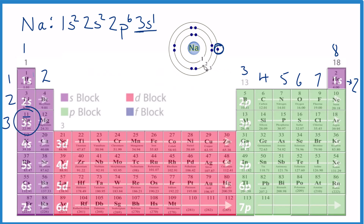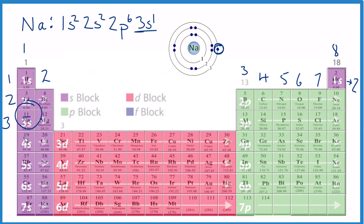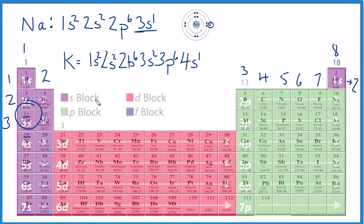Pause and write the electron configuration for potassium (K), which has 19 electrons. For potassium, we know it's in the fourth energy level and it ends in s1, so it's going to end in 4s1. It has one valence electron. The highest energy level is 4, and it only has one valence electron — so everything in group 1 has one valence electron.